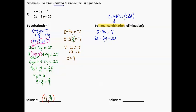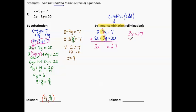Let's write this system again: x minus 3y equals 7, and 2x plus 3y equals 20. I'm going to add these two equations to make one equation. I can see the y terms have opposite coefficients: negative 3y and positive 3y, so when I add them they go away — they make 0y. Adding the x terms: 1x plus 2x makes 3x. Adding the constants: 7 plus 20 makes 27. So 3x equals 27. Dividing both sides by 3, x equals 9.